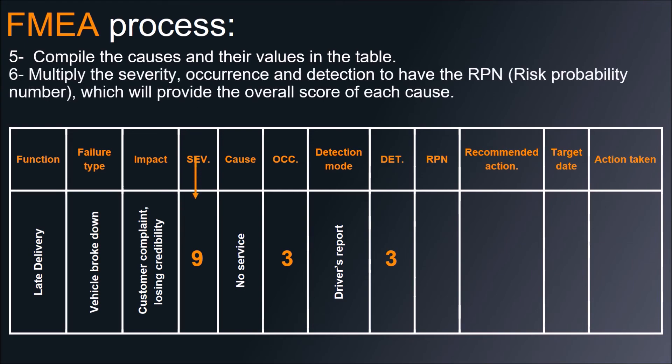Multiply the severity, occurrence, and detection to get the RPN — Risk Priority Number — which will provide the overall score of each cause.